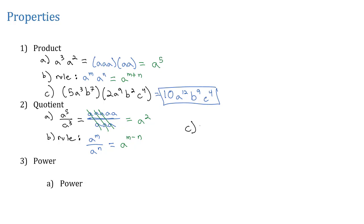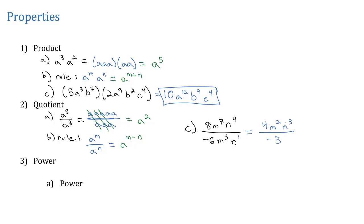For example, if I had eight m to the seventh n to the fourth over negative six m to the fifth n, we can reduce eight over negative six by dividing by two to get four over negative three. For the variables, we subtract the exponents. Seven minus five gives us m squared, and four minus one gives us n to the third. And we've simplified using the quotient rule.